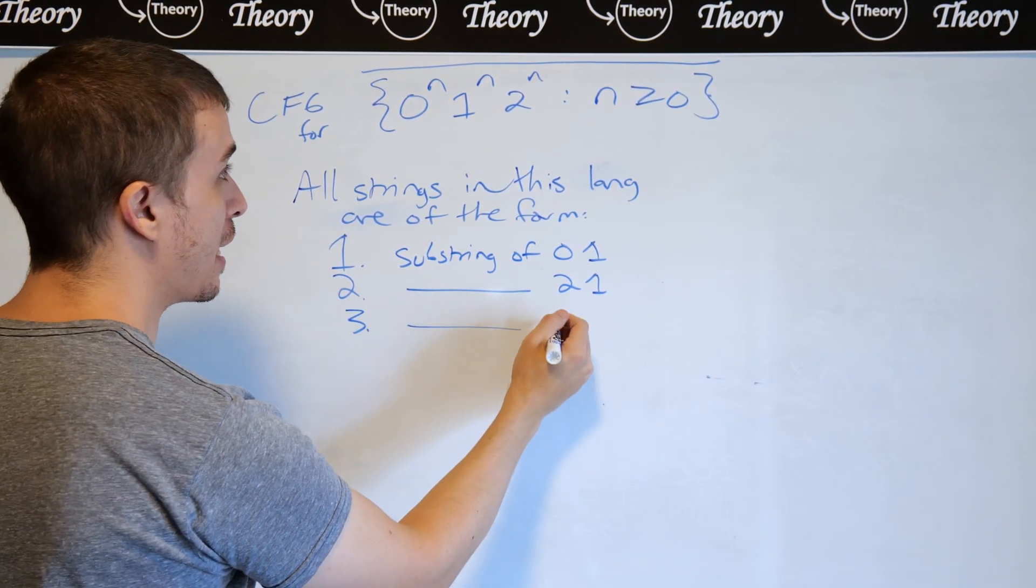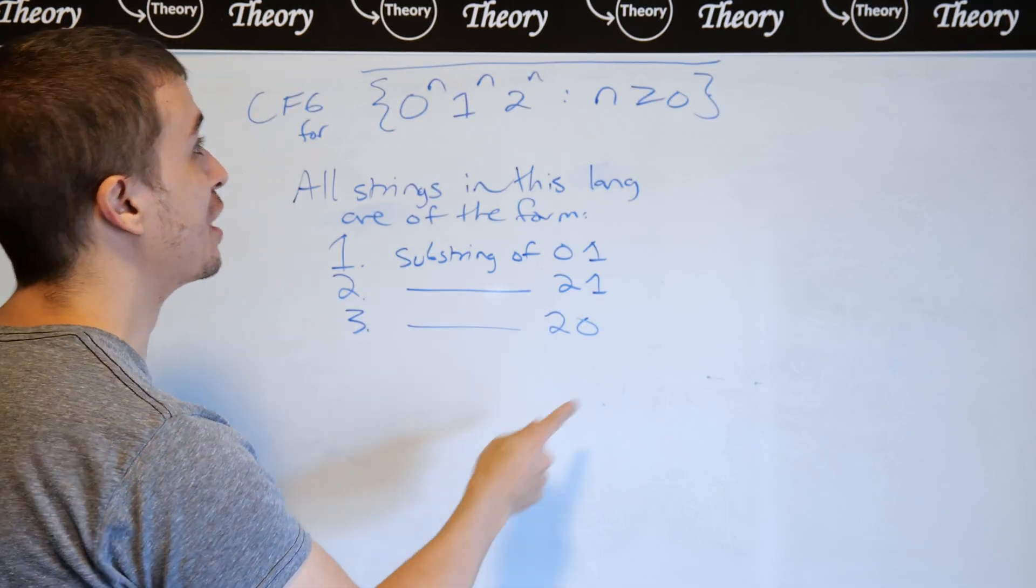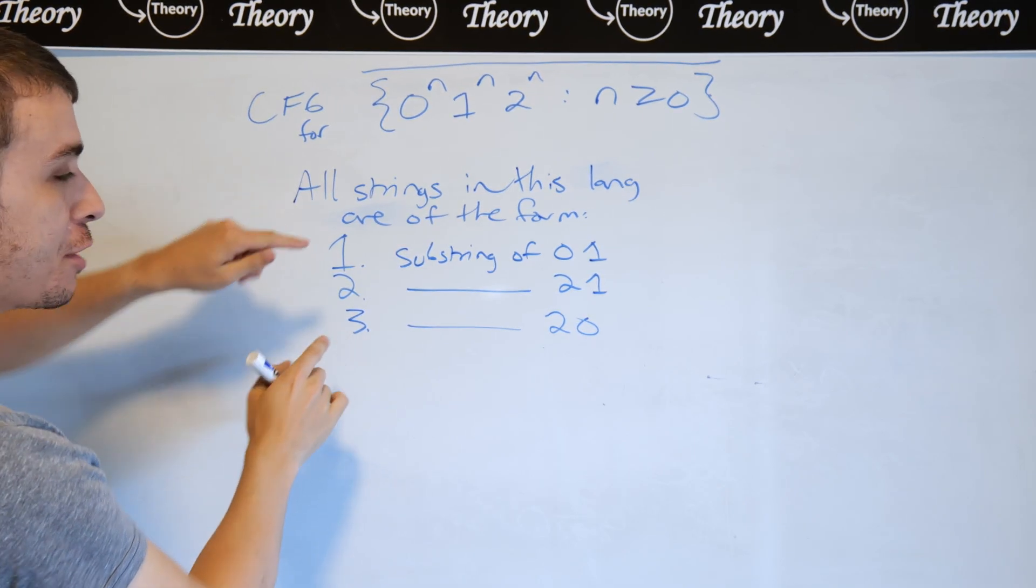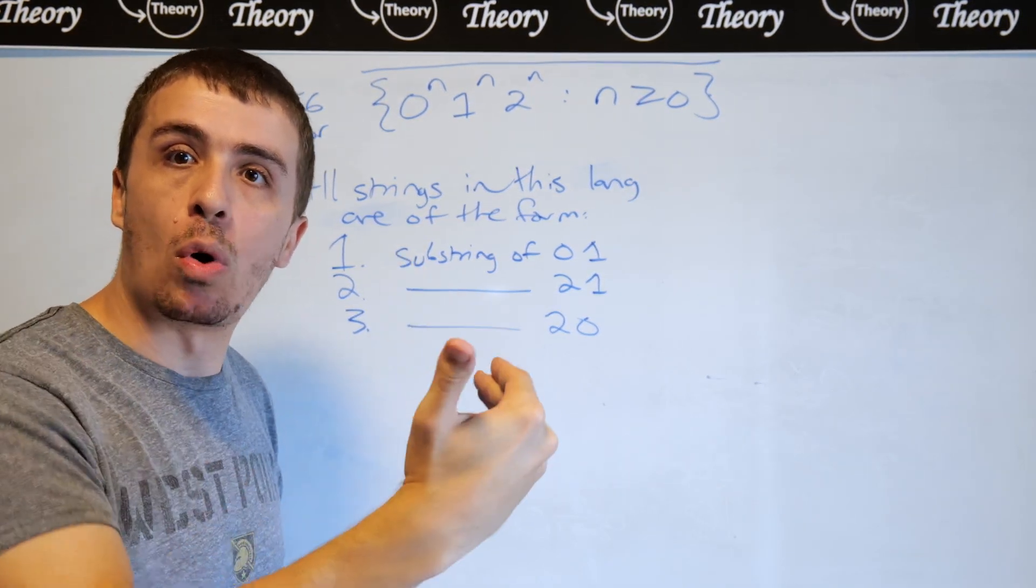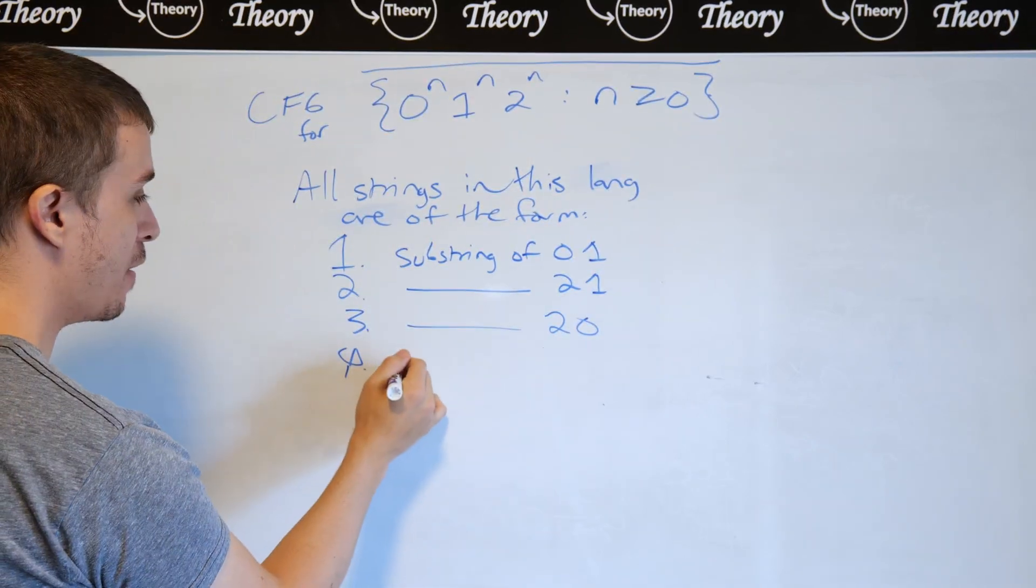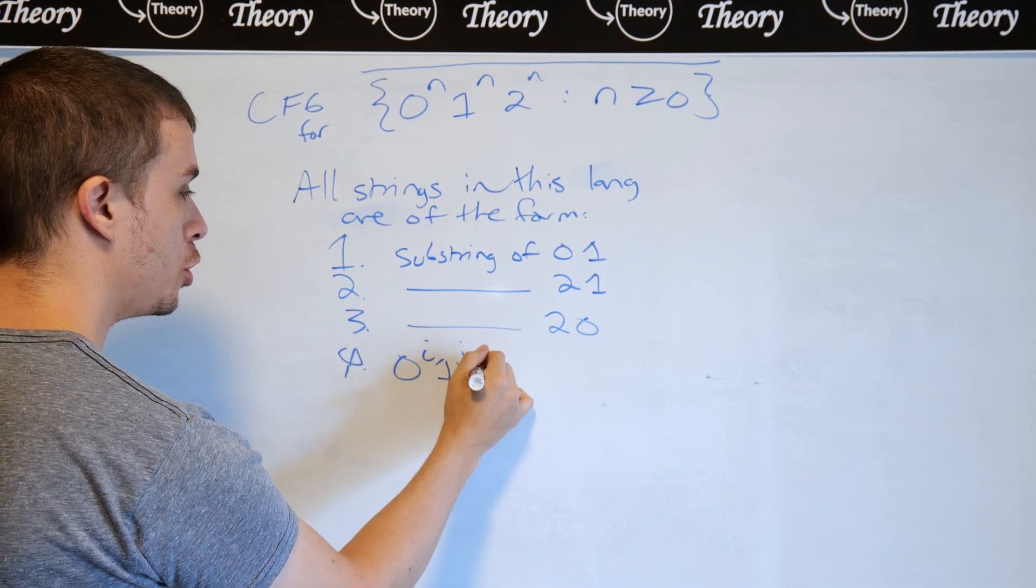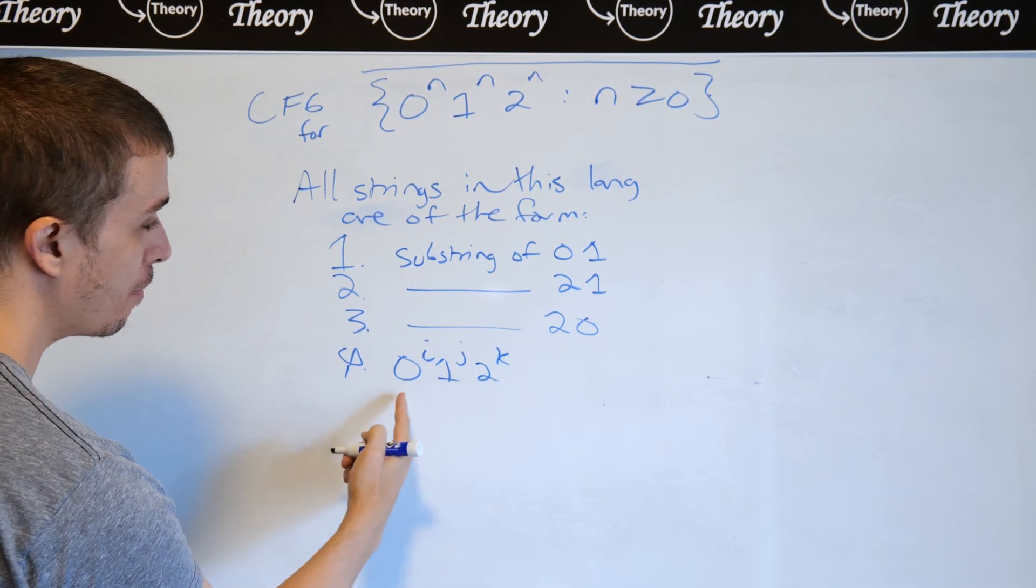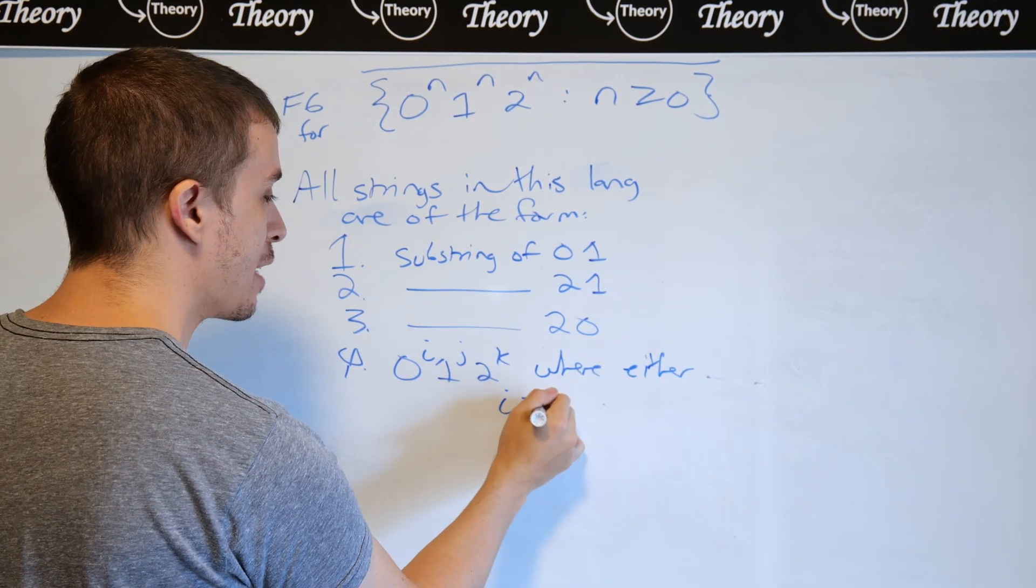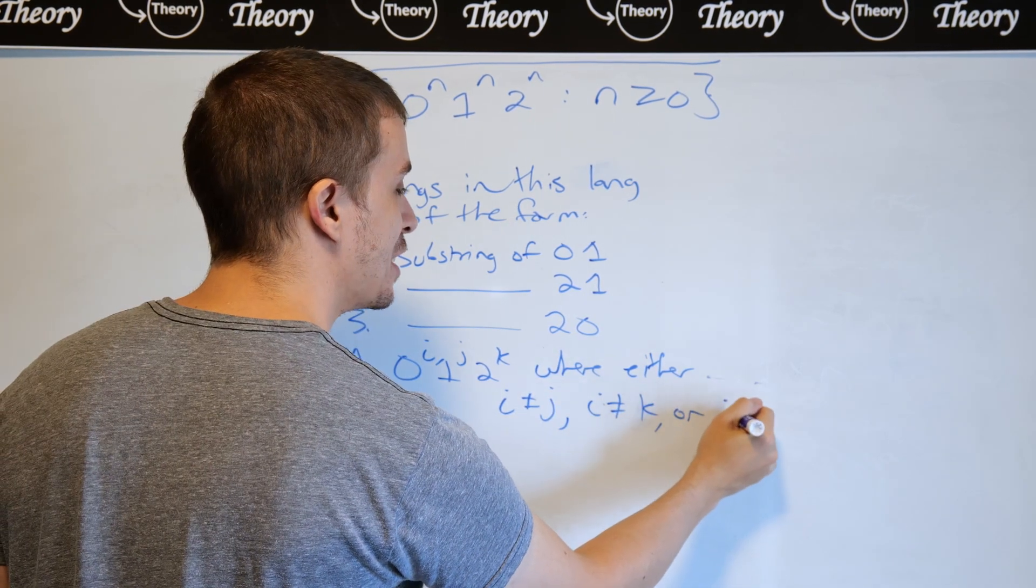And then if it has a substring of 2, 0, then those will all be strings in the complement language. So considering any string that is not one of these three, then it must be 0s, 1s, and then 2s, but it has the counts being wrong in some way. We have it of the form 0 to the i, 1 to the j, 2 to the k. So it's some set of 0s, then 1s, then 2s, where either i is not equal to j, i is not equal to k, or j is not equal to k.